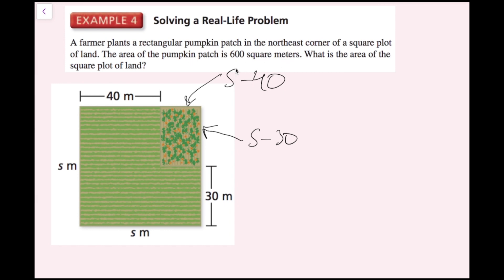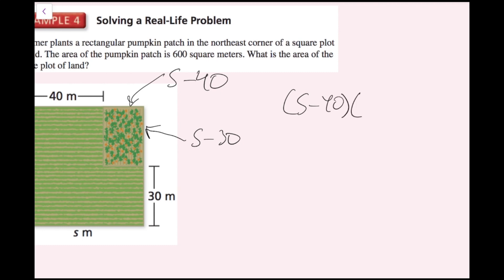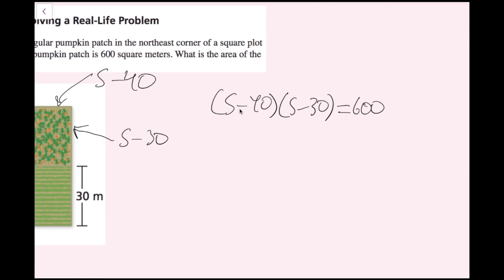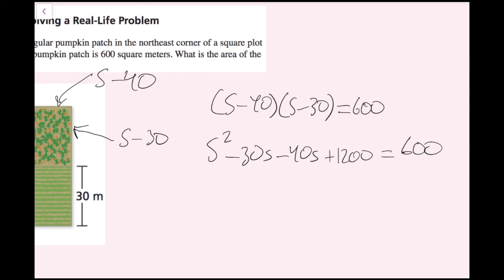I can rewrite the pumpkin patch side lengths as S minus 40 and S minus 30. Since area equals length times width, I set up the equation: S minus 40 times S minus 30 equals 600. Multiplying that out gives S squared minus 30S minus 40S plus 1200 equals 600. The goal is to get everything on the left side equal to zero and then factor to use the zero product property.